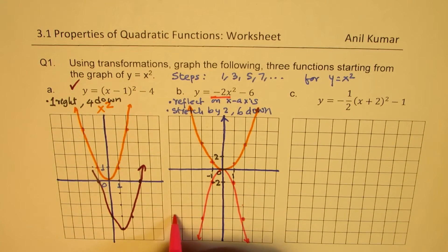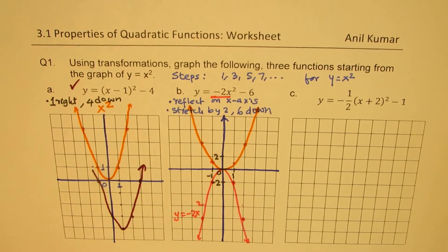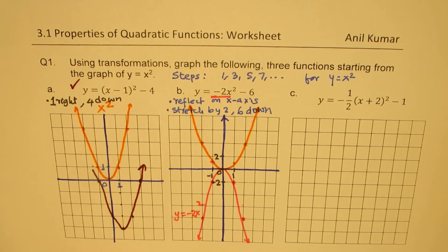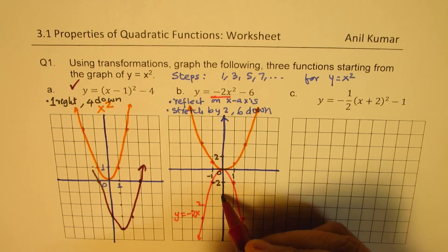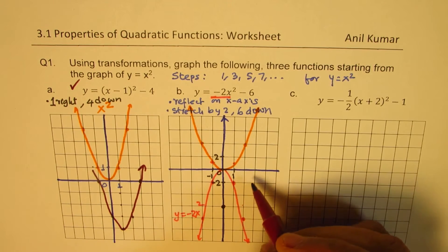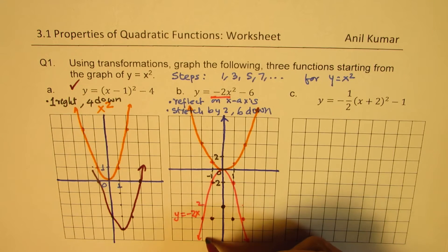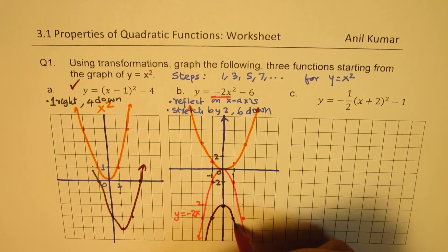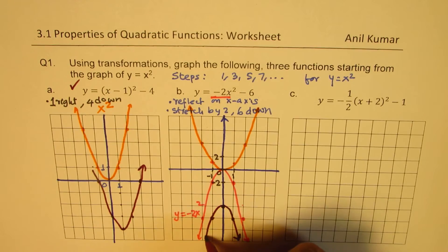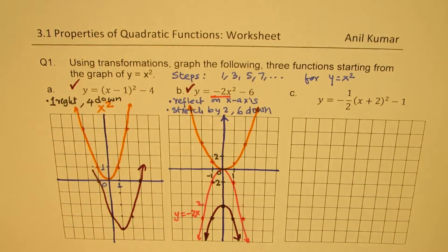Now minus 6 means we translate everything 6 units down. So this point shifts 2, 4, 6 units down, and the whole graph moves 6 units down. That becomes the graph for the given function y equals minus 2x squared minus 6 using transformations.